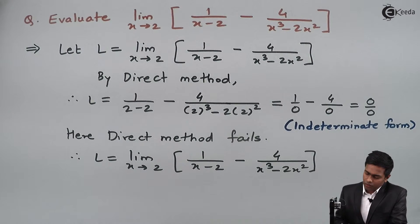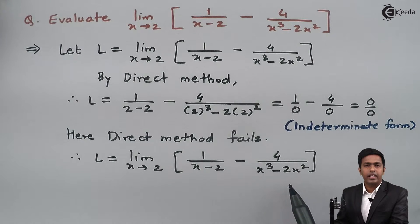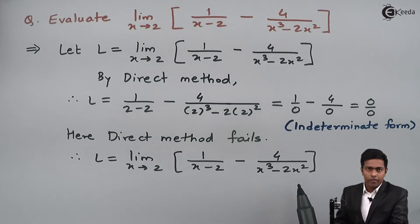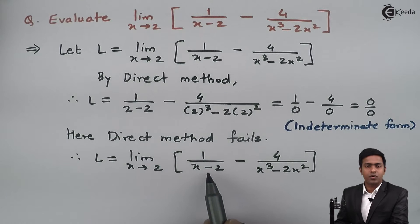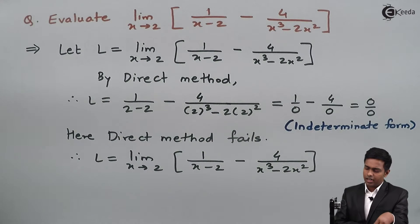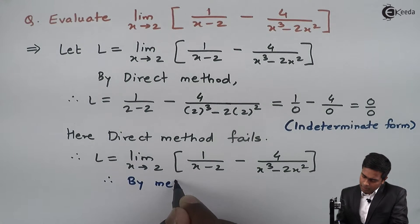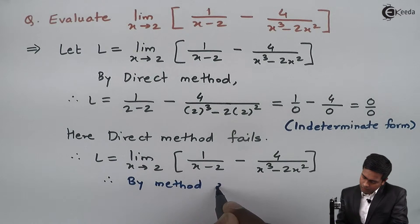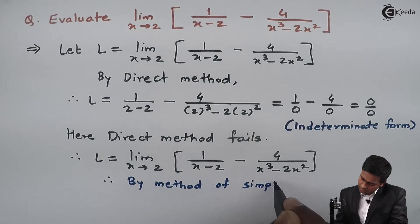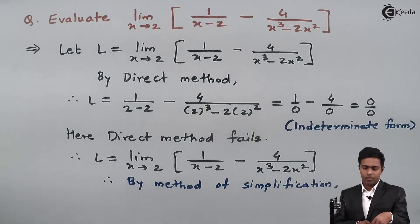If we observe the second term, from it we can take x squared common, and in the bracket we get (x minus 2). That (x minus 2) is the same as in the first term, so we can perform the LCM and by simplifying we can get the answer. Hence I will apply the method of simplification.